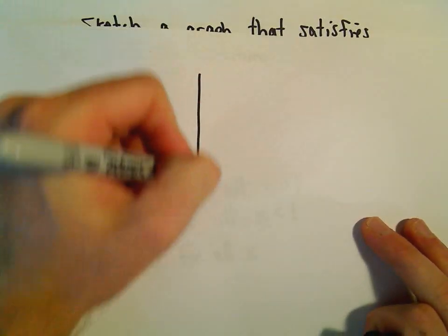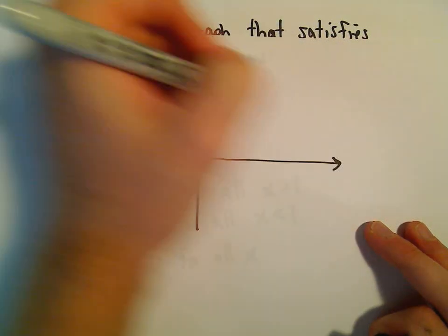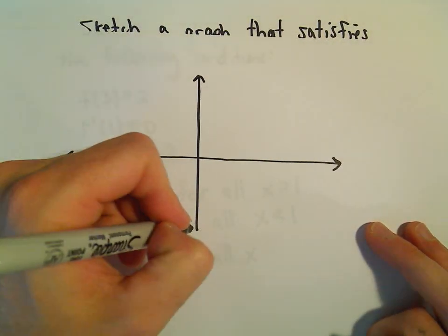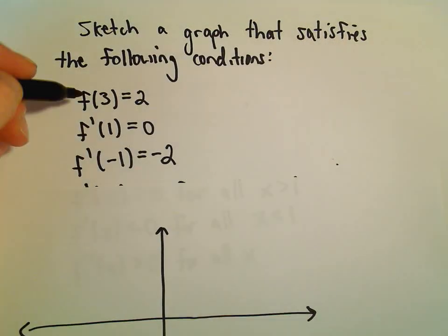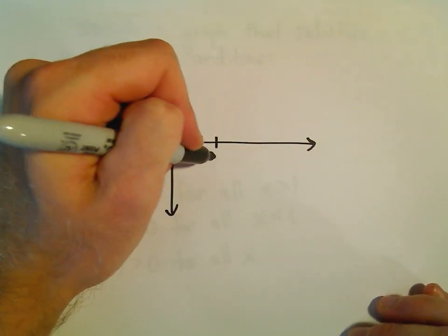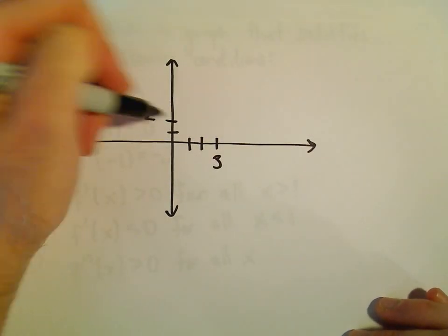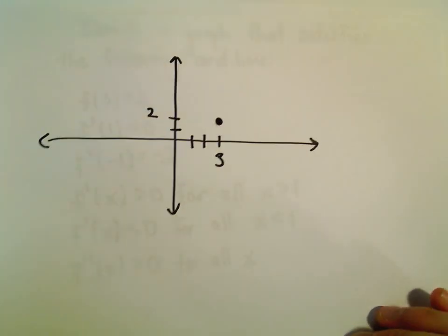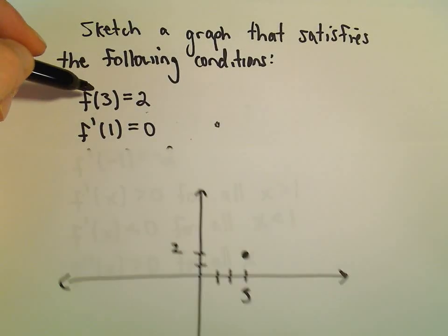When I sketch these, I try to summarize everything first. Since f of 3 equals 2, that means the point (3, 2) is on the graph, and I'll put that dot on there since that point has to be there.